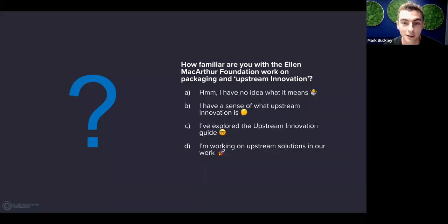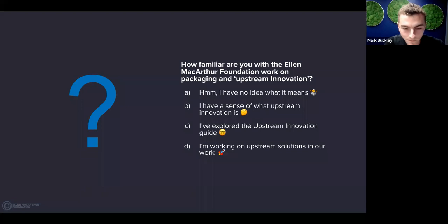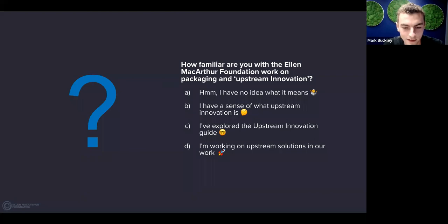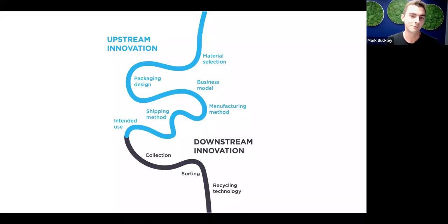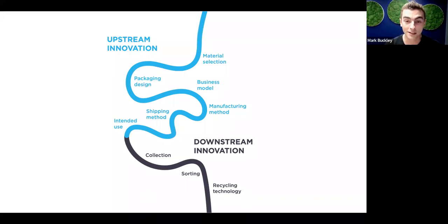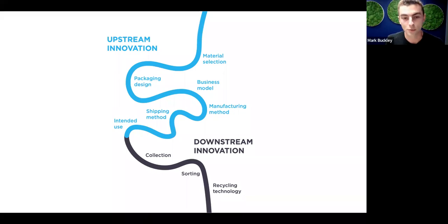Before we dive in, it would be helpful to find out how familiar people in the chat are with our work on packaging and upstream innovation — options A, B, C, or D in the chat. Very briefly, upstream innovation is about working out how to prevent waste from being created in the first place, rather than dealing with a pile of waste. It's about rethinking the design stage of a product or material.